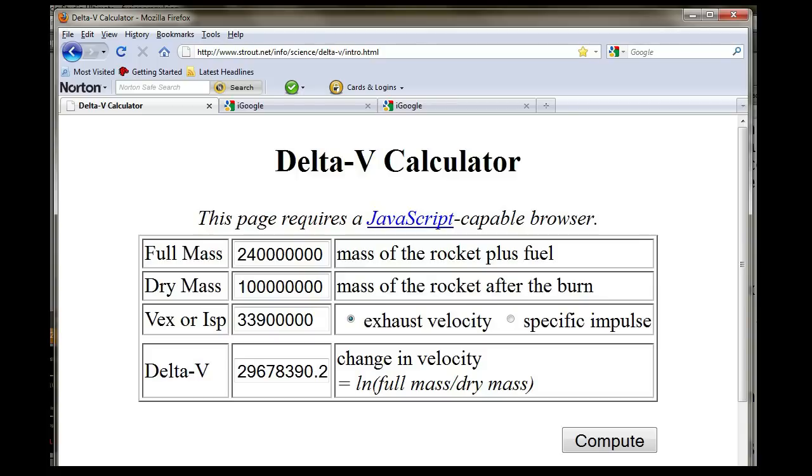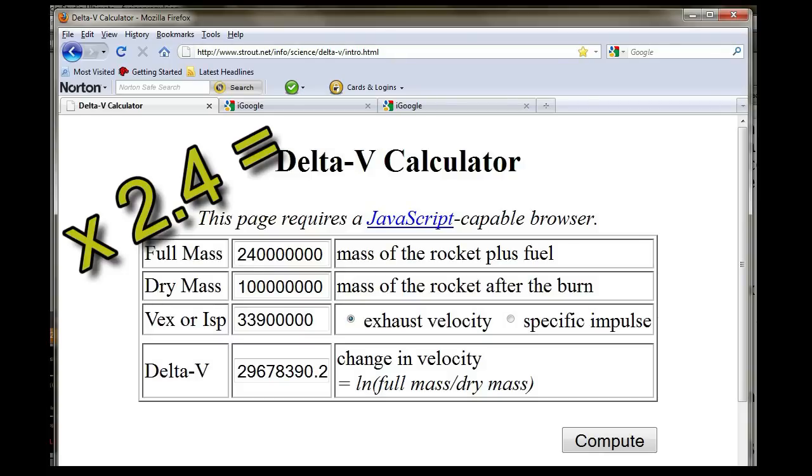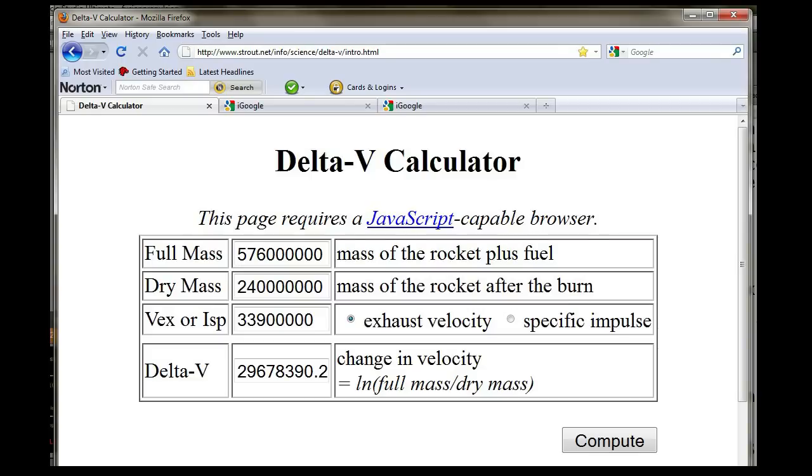Then when we get to top speed, we'll have enough gas left to slow to a stop. All we have to do is multiply 240,000 metric tons by 2.4, and we get our answer. It's 576,000 metric tons total.